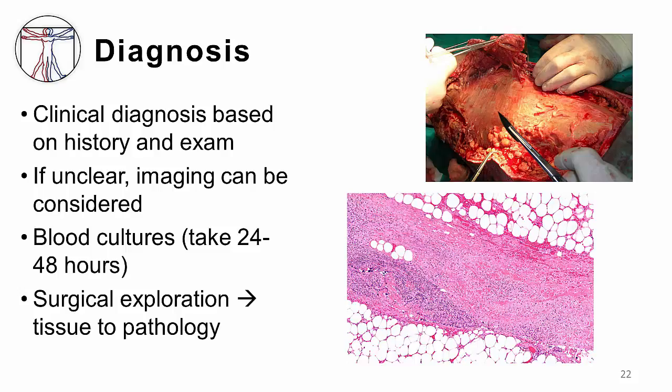In this lower image, which is an H&E stain, necrosis of the dense connective tissue fascia is shown in the center of the image, interposed between fat lobules.